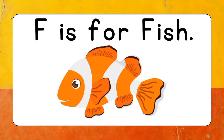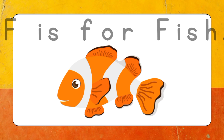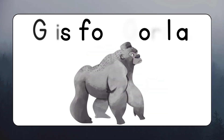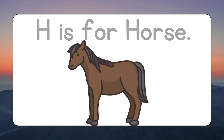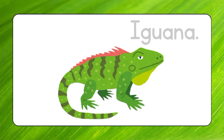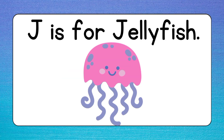F is for Fish. G is for Gorilla. H is for Horse. I is for Iguana. J is for Jellyfish.